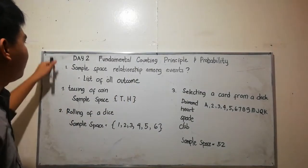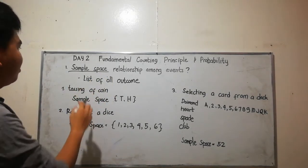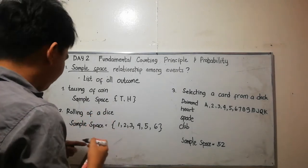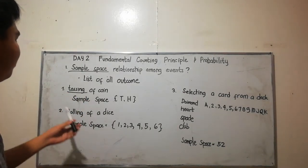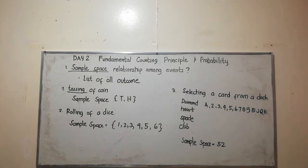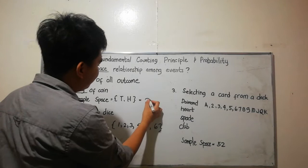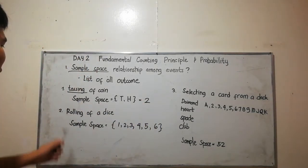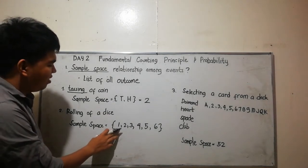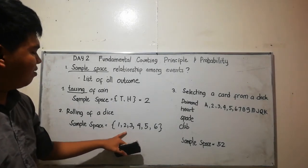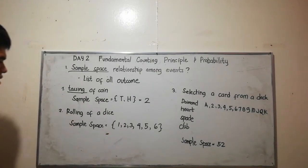Now we will go to sample space. Sample space is a list of all possible outcomes. For example, tossing a coin — there are two possible outcomes: head or tail, so the sample space is equal to two. Rolling a dice, it can be one, two, three, four, five, or six, so the total sample space is six.